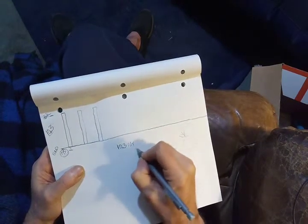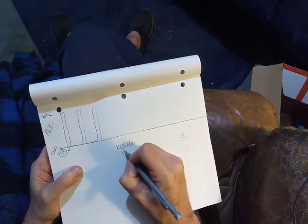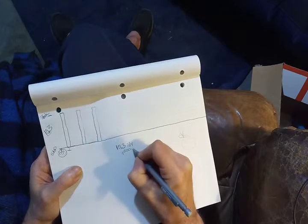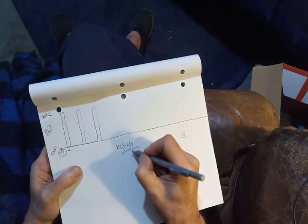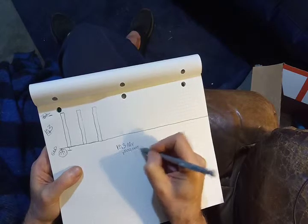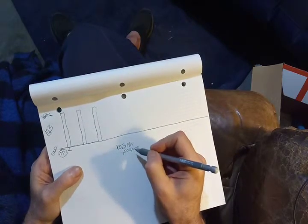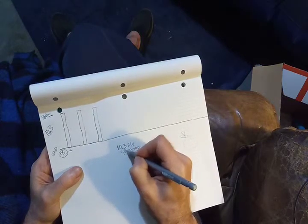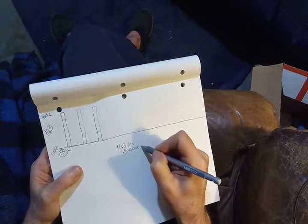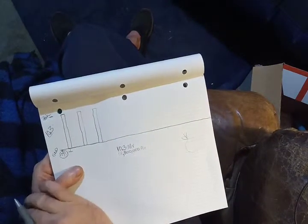So anyway, I've seen this peak is 10.3 MV, right? Mega is, right, comma, 1, 2, 3, 4, 5, 6, right? Thousands, millions, hundreds, thousands, millions. So we're here at 10.3 MV on a peak amplitude here.